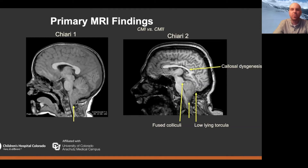As many of you are probably already aware, there are a number of other features seen in the brains of patients with myelomeningocele and Chiari 2 as well — things like large fused massa intermedia and interdigitated gyri, among others.